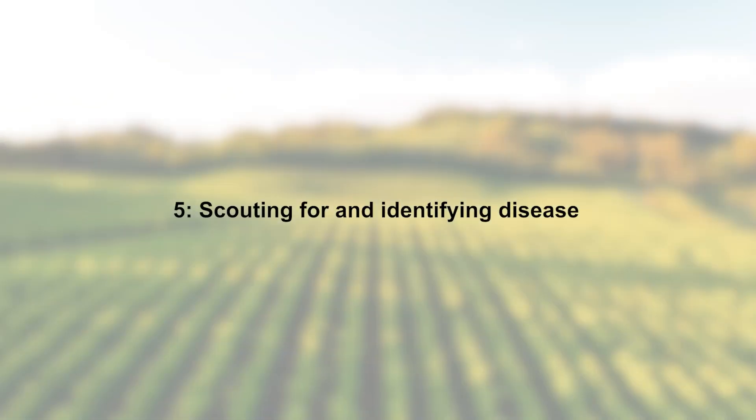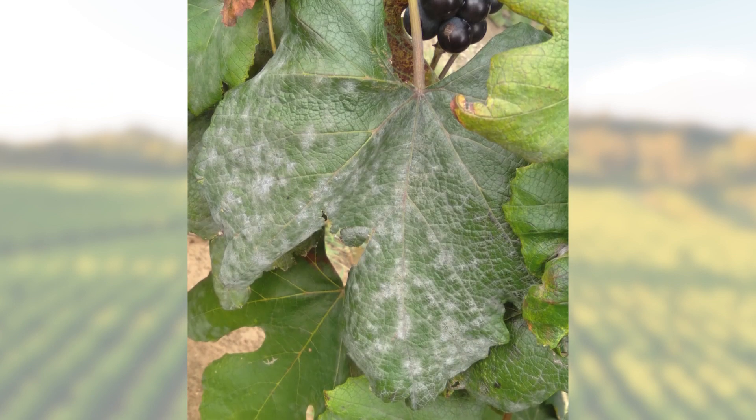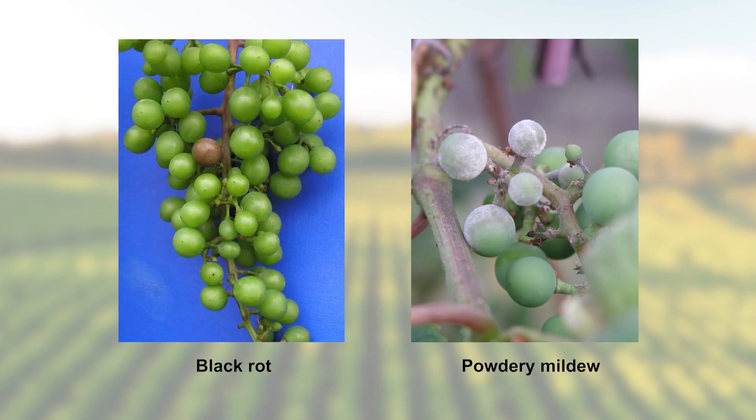Diseases may affect plant parts differently and have varying symptoms. It's important to know what different diseases look like so you can properly identify them and accordingly implement effective control measures.